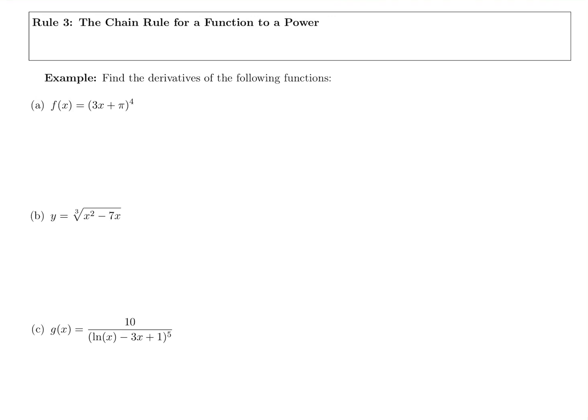Here we have the chain rule for a function to a power — our third longer rule. It's the shortest of the longer rules, but the hardest one to recognize. If you have y equals a function to a power, so instead of just x to the fifth, it's x plus 1 to the fifth — something more than just a regular x being raised to a power — that tells us we have to use the chain rule.